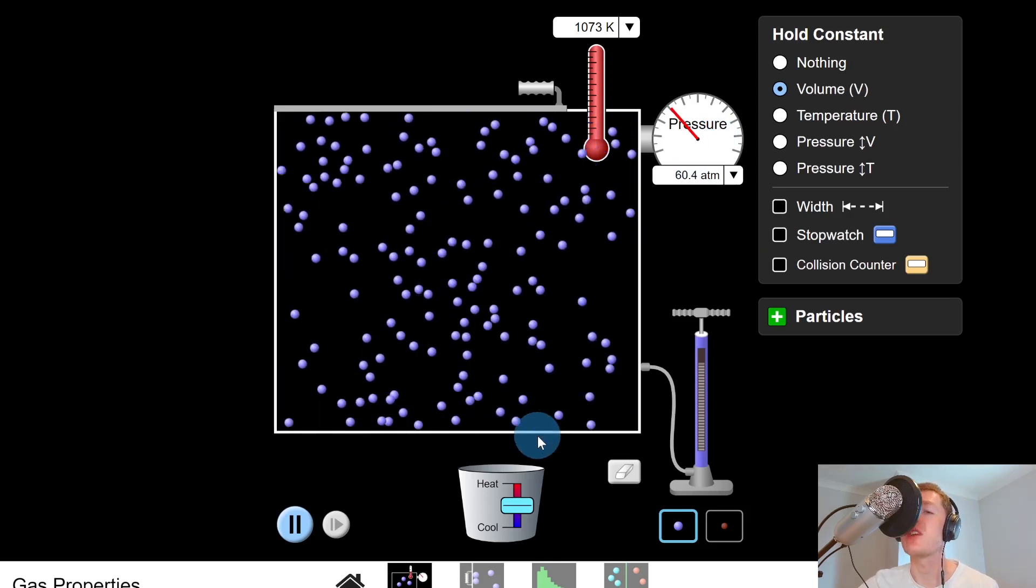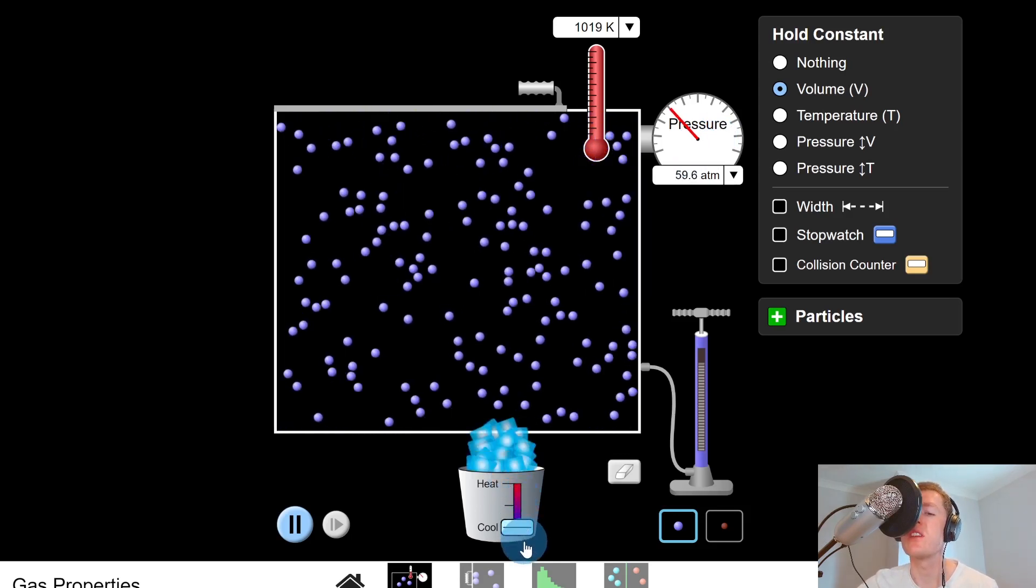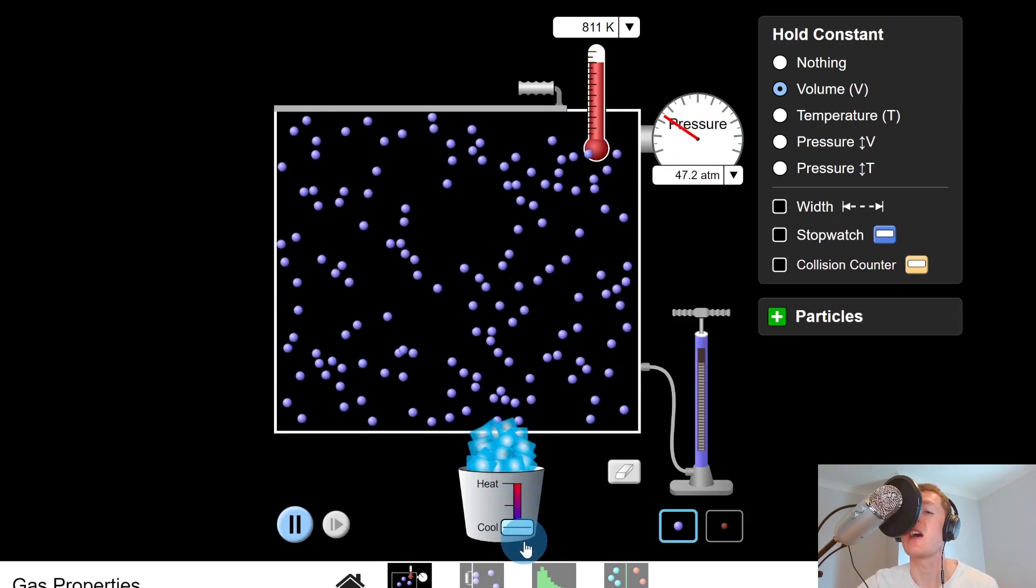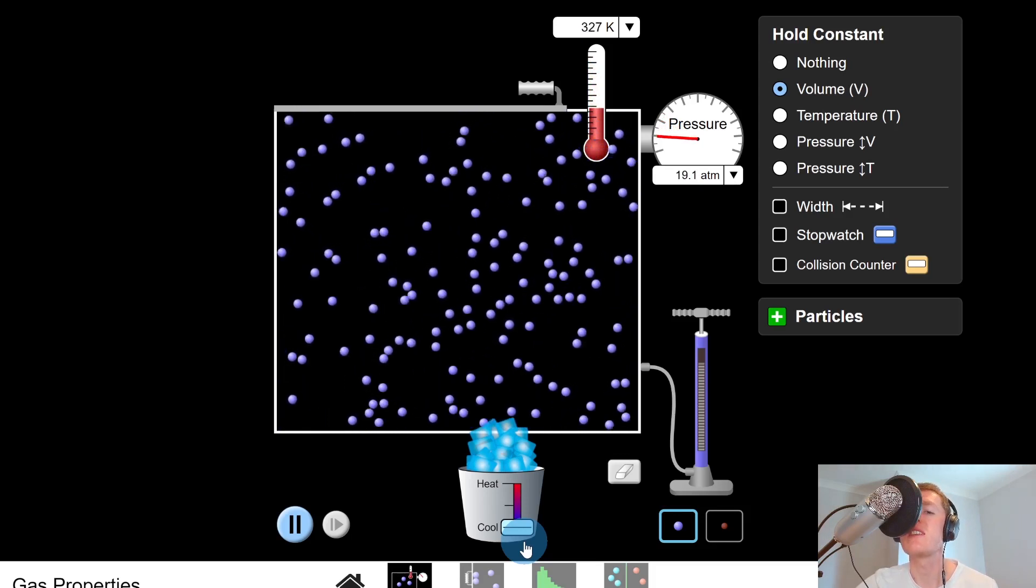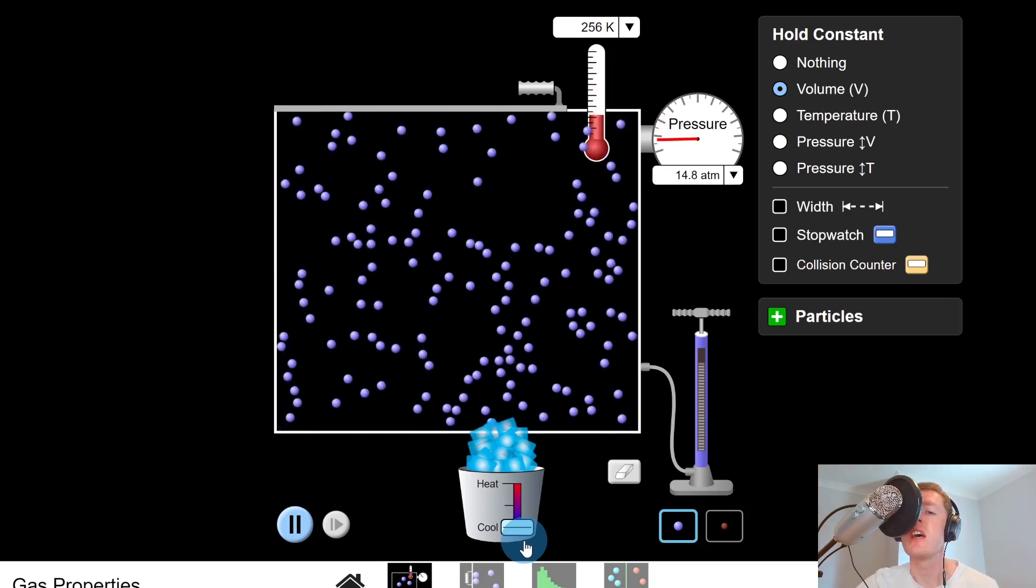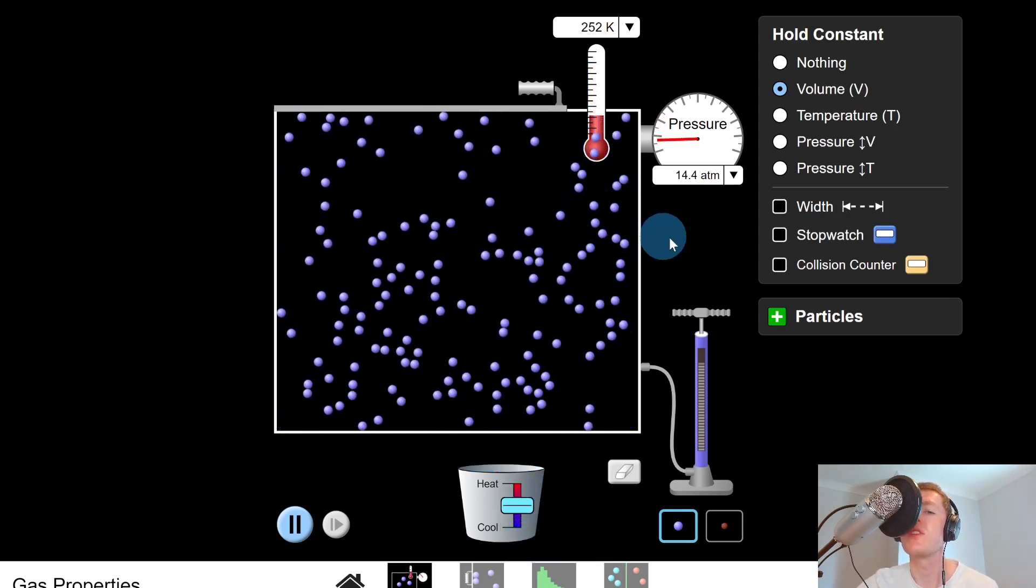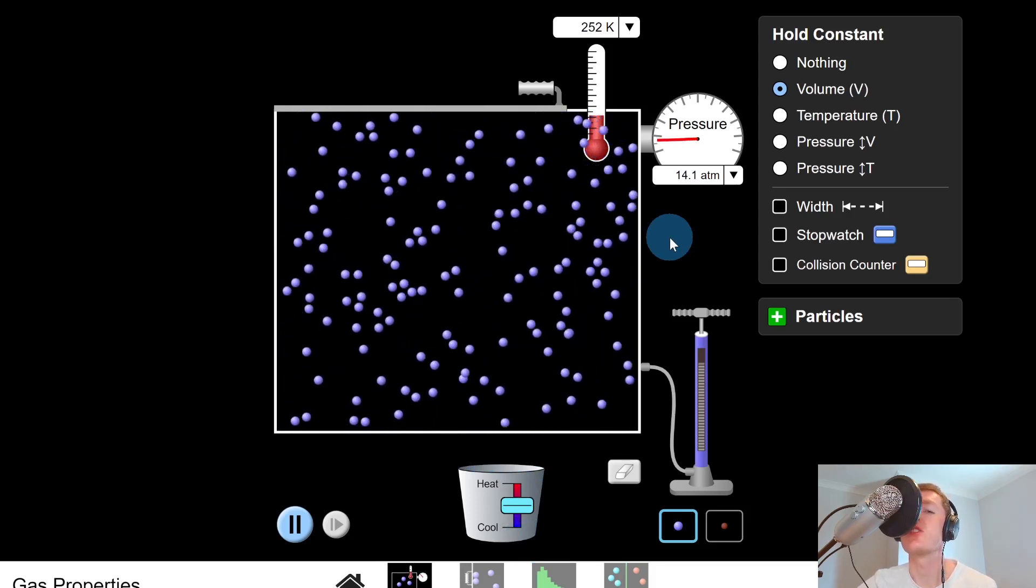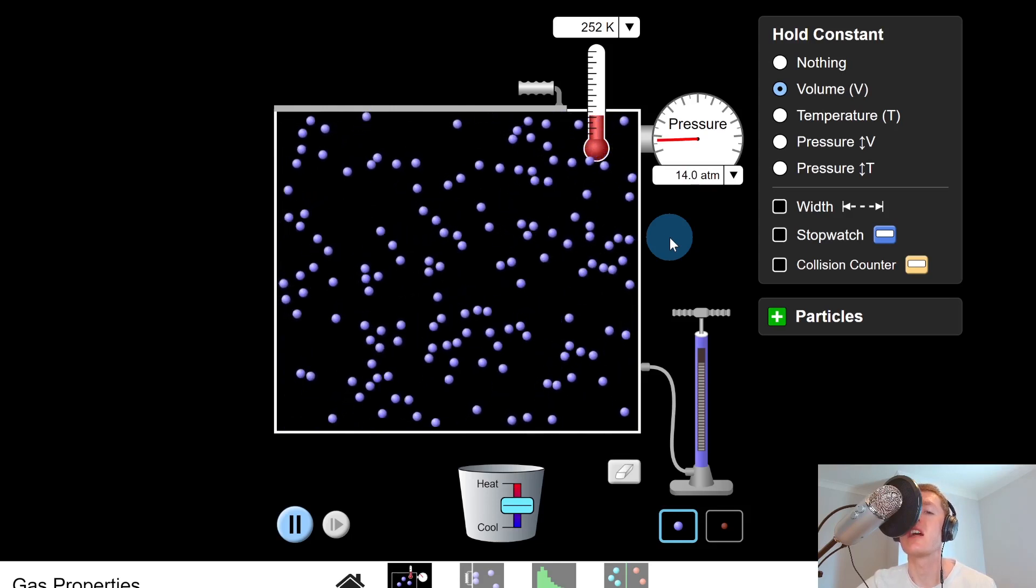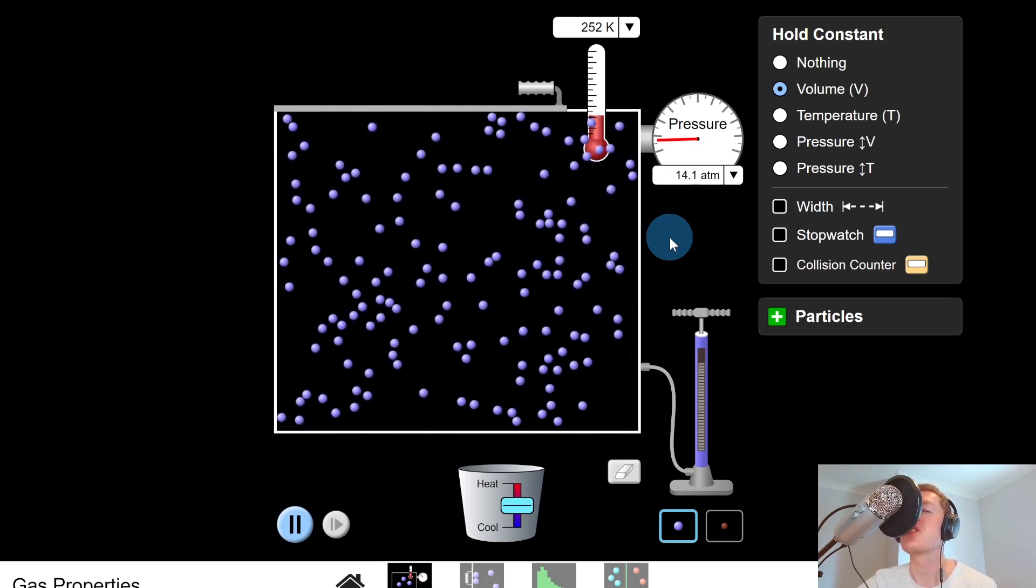However, the opposite is also true. So if I decrease the temperature and cool the gas down, then you'll notice the pressure is decreasing. And that's because the particles now have less kinetic energy and therefore less speed. And they're therefore going to hit off the walls of the container less often and with less force. And that means we can say there is a reduced force per unit area exerted on the walls of the container, which leads to a decreased pressure.